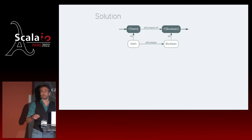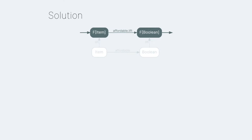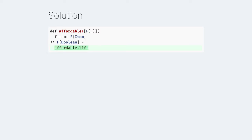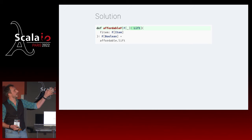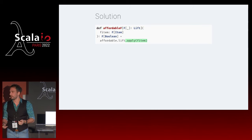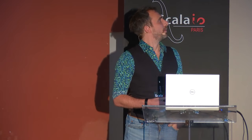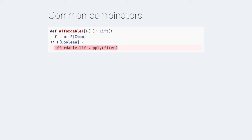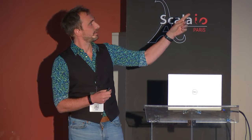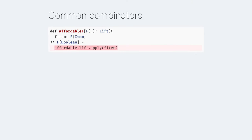Now that we have the solution, we just follow the arrows to implement it. Affordable F is: first, affordable.lift - and for that to work, F needs to be a lift - then we apply that to our F of item. That bit of code makes me a little bit uncomfortable. It's not very pretty. And I can explain why: this is very functional. For all we like to think of ourselves as fancy functional programmers, we have a function as context, we transform it, we lift it, and then apply it to some input - which is the essence of functional programming.